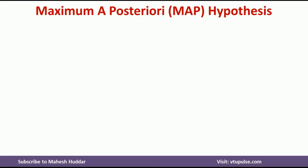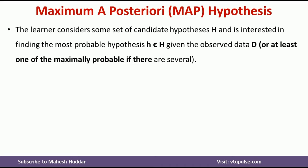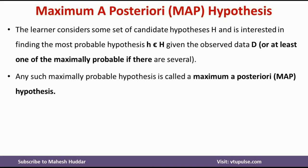Now, what is Maximum A Posteriori Hypothesis? The learner considers some set of candidate hypotheses H and is interested in finding the most probable hypothesis given the observed data D, or at least one of the maximally probable hypotheses if there are several. Any such maximally probable hypothesis is called the Maximum A Posteriori Hypothesis, or MAP hypothesis.